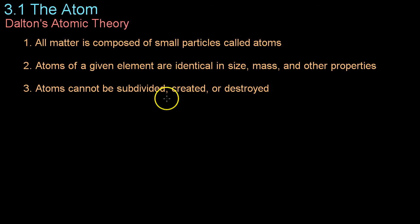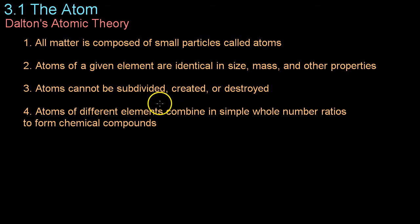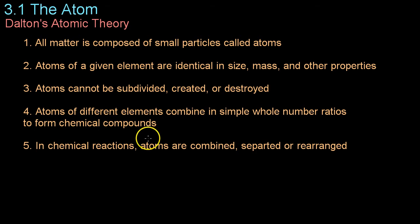The fourth assertion was that atoms of different elements combine in simple whole-number ratios to form chemical compounds. This was based on the law of definite proportions and the law of multiple proportions that we just discussed. The final assertion was that in chemical reactions, atoms are combined, separated, or rearranged, which is something that we now know to be very true in chemical reactions even today. These assertions are pretty accurate as far as our modern practices with chemistry go. For example, if you take a carbon atom and an oxygen atom and combine them to get a carbon monoxide molecule, you'll notice that nothing is divided. Rather, these are just combined, and you have the same amount of mass here as you do over here.